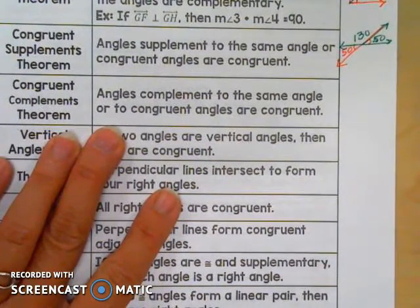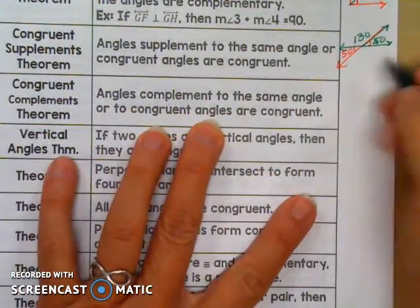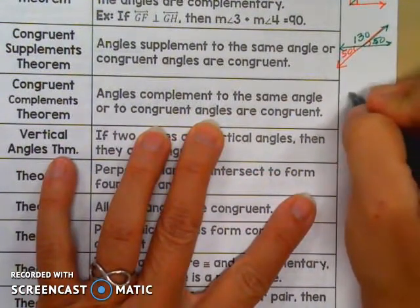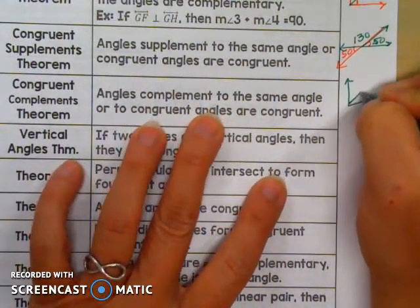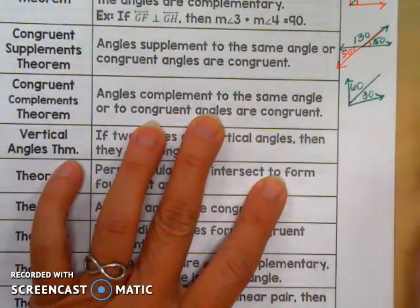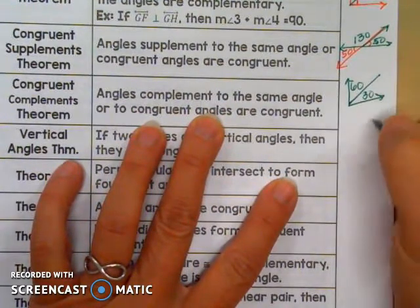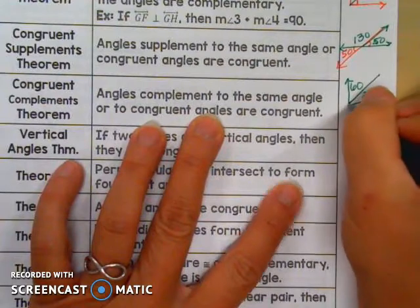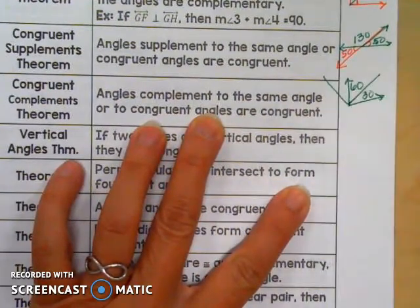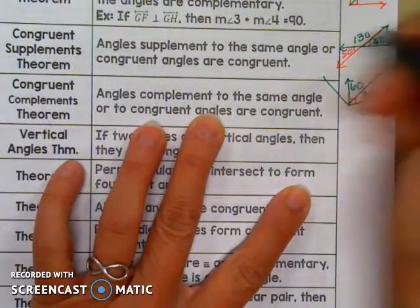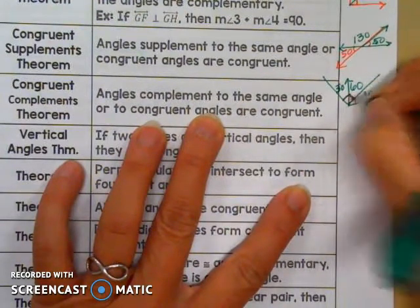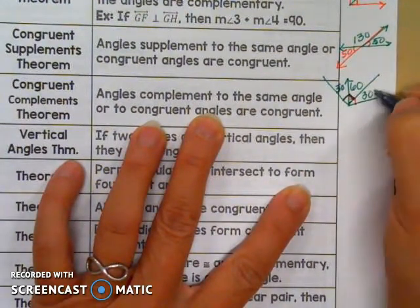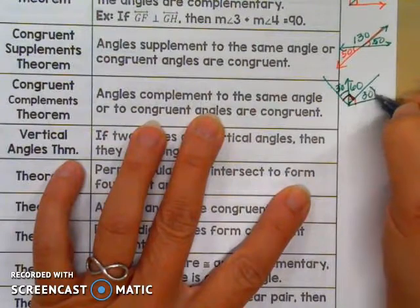Congruent Complements Theorem: two angles complementary to the same angle are congruent. For example, if this is a 30-degree angle and this is a 60-degree angle in a right angle, and I have another right angle with another 30-degree angle, these two 30-degree angles are both complementary to the 60-degree angle, which means these two angles must be congruent to each other.